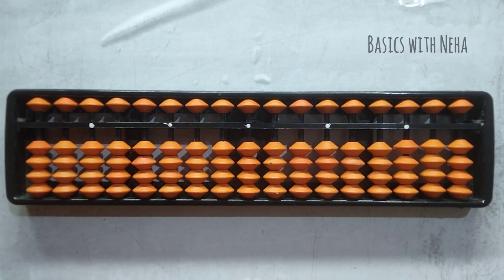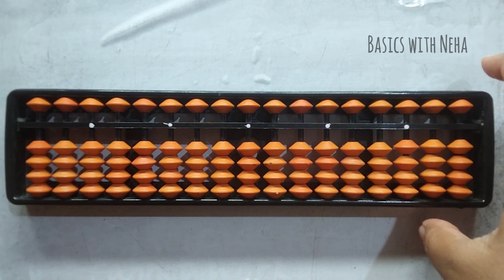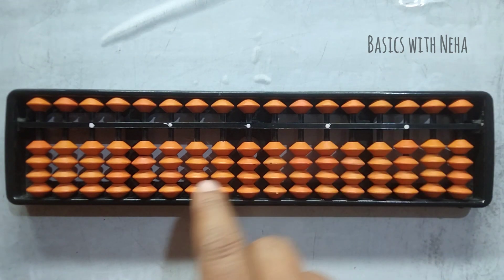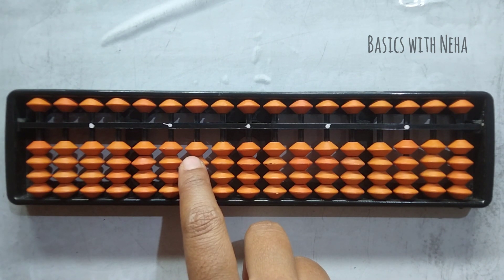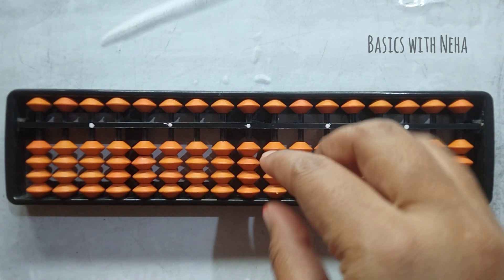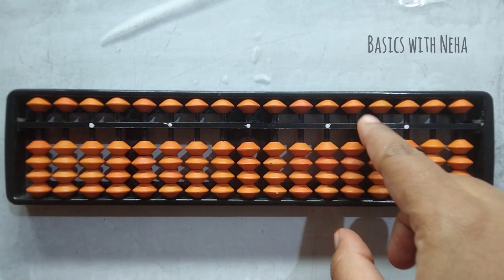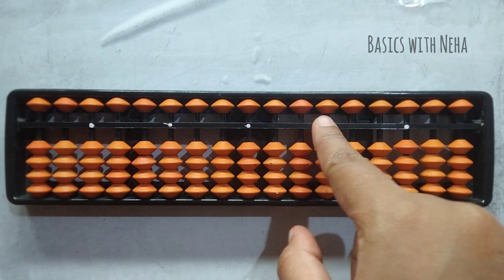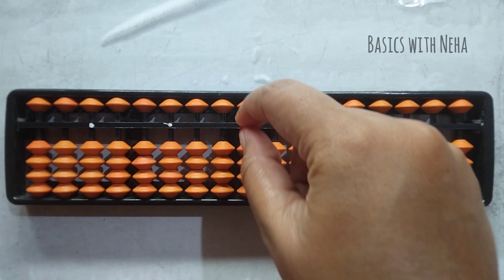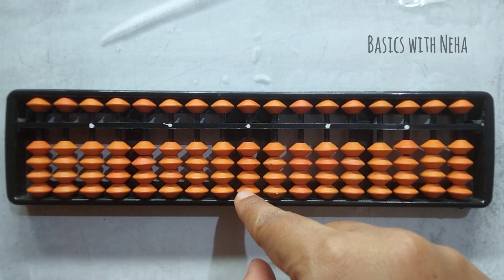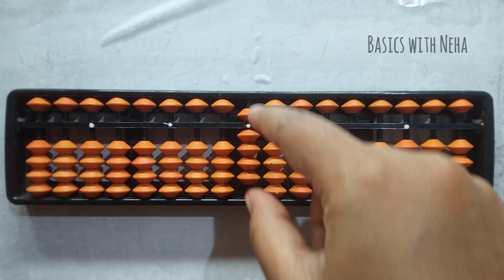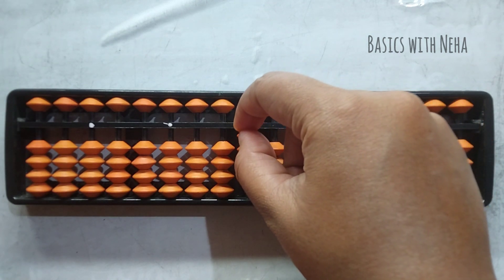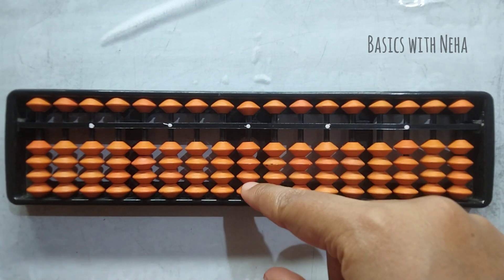Before I tell you about the formulas, let me explain how to check the availability of beads to add and to subtract. If you have not yet watched my video on basics — Abacus day one — I would want you to definitely watch that video and get back to this one; the link is in the description box. To add any number, the beads must be away from the middle bar — those are the available beads to add. When all the beads are touching the middle bar, those are available beads to subtract. When beads are away, we can add them but cannot subtract them.